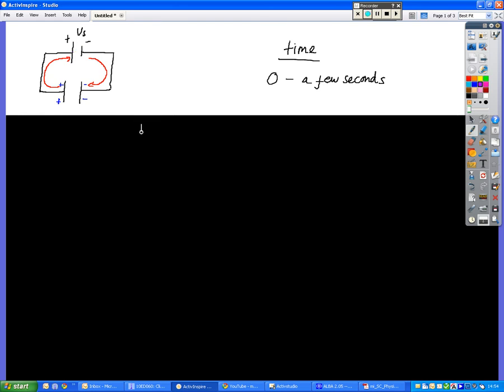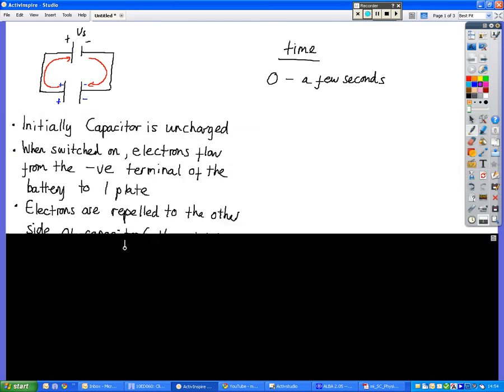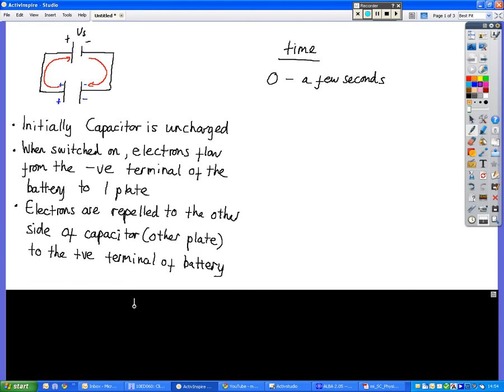You've still got current flowing but you're starting to establish a potential difference because you've got a charge difference from one side to the other. VC at this point in time is very small. VC being the voltage across the capacitor. It's very small because we've got very little potential difference across this capacitor.